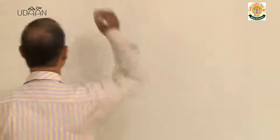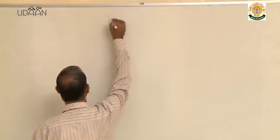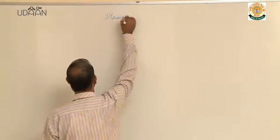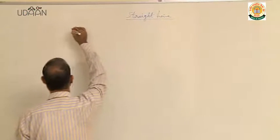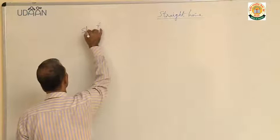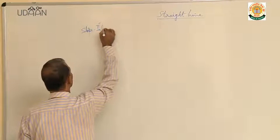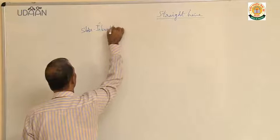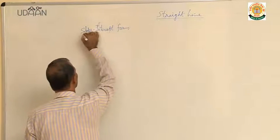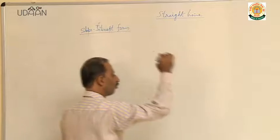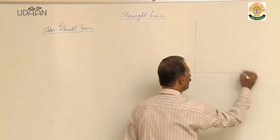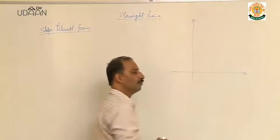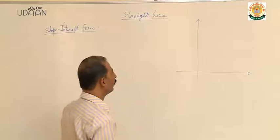I have slope-intercept form. Now I am taking the same topic, continuous straight line, and the form is slope-intercept form. Whenever slope is given and intercept on y-axis is given, then we have to use this form to form the equation. Now what do you mean by y-intercept?